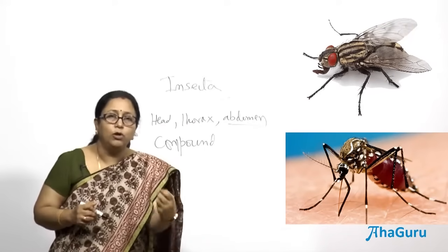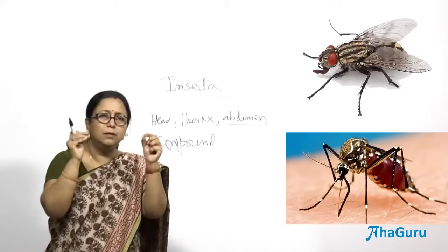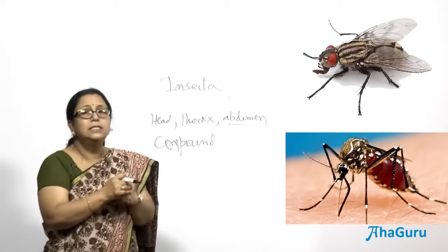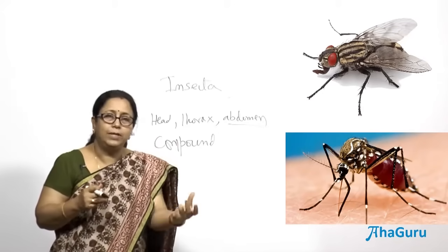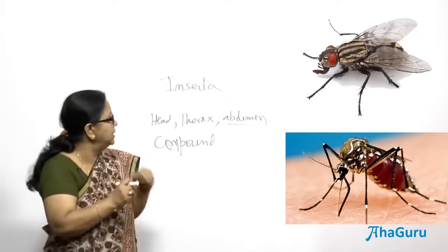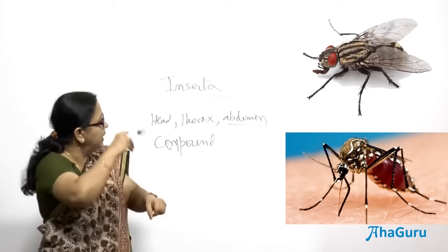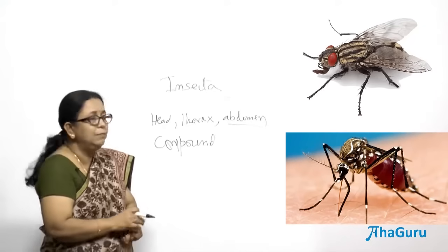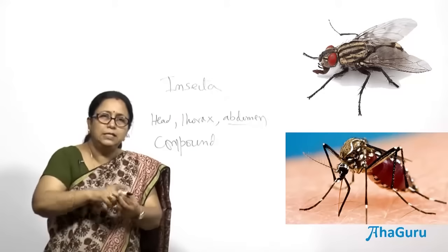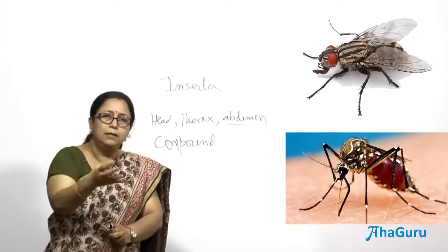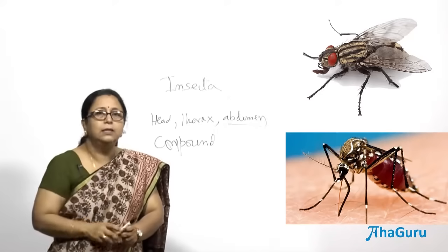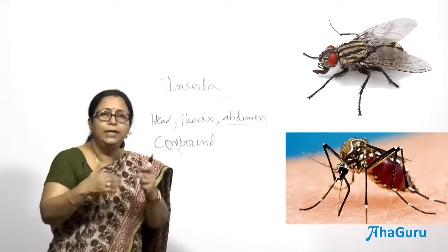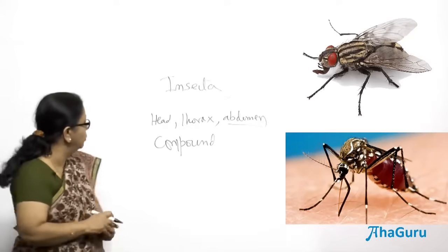Insects have mouthparts specialized for chewing and masticating. For example, the cockroach has mandibles which help it chew food. Mosquitoes have piercing and sucking mouthparts — they pierce and suck blood from humans or other animals. House flies have sponging mouthparts: they sponge food with mucus and once it dissolves, take it in. Insects thus have a variety of mouthparts suited to eating various kinds of food, making them the most successful group.